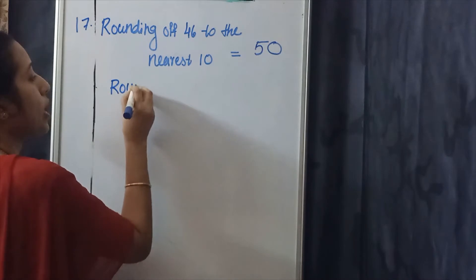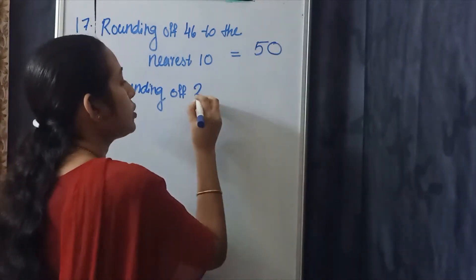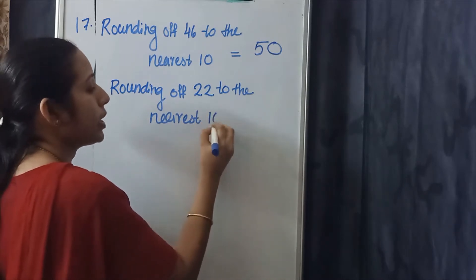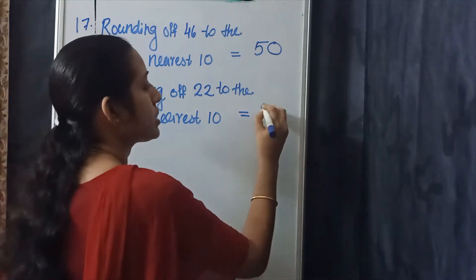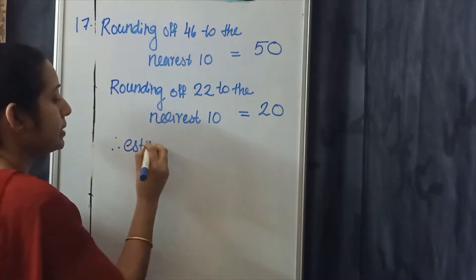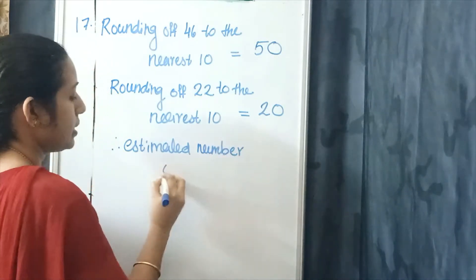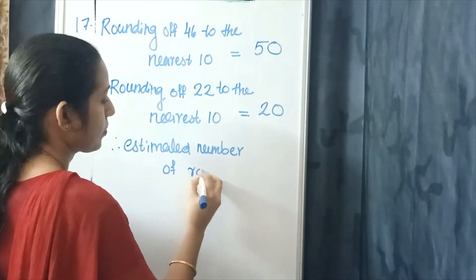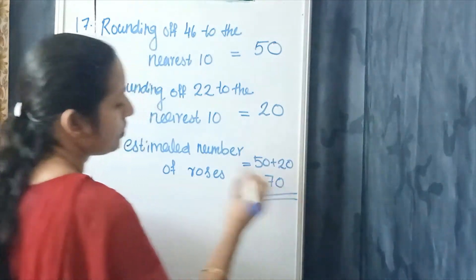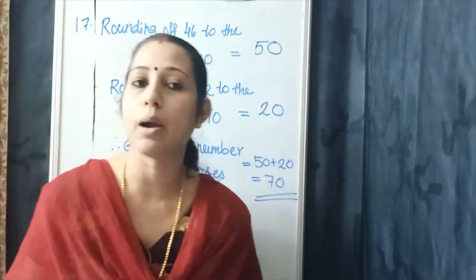Next, rounding off the second number — Mona has 22 roses. Rounding off 22 to the nearest 10. We round off the number to the nearest 10, so the estimated value of 22 is 20. Therefore, the estimated number of roses is equal to 50 plus 20, which is equal to 70. Round the first number, round the second number, then the estimated number of roses. Clear? Simple question.